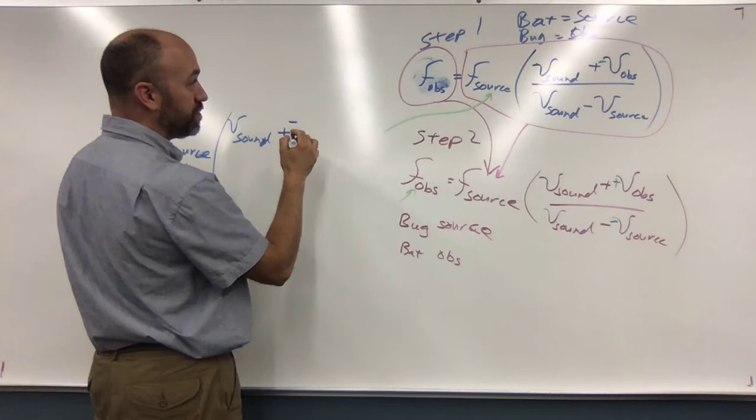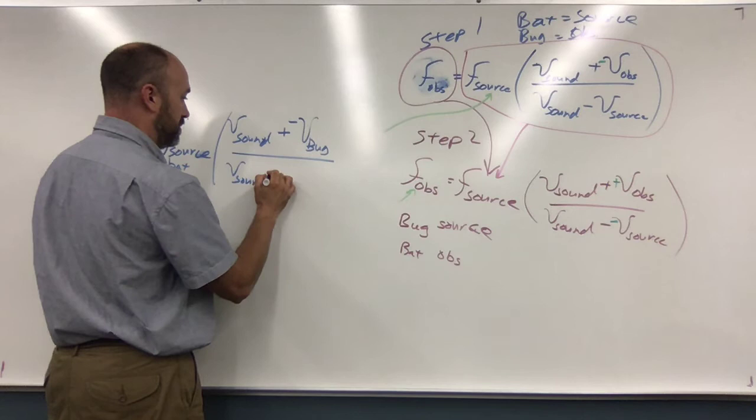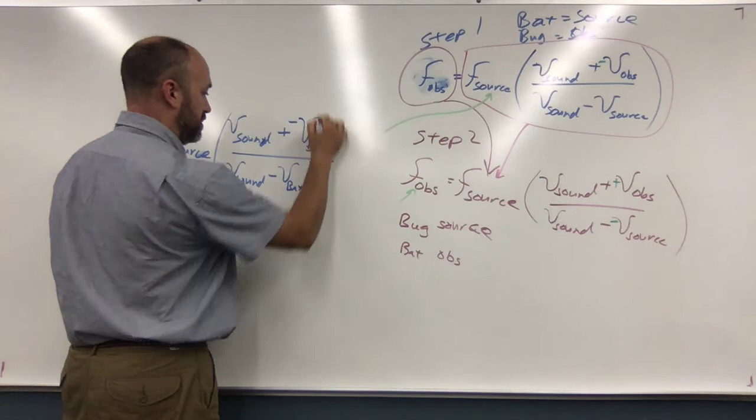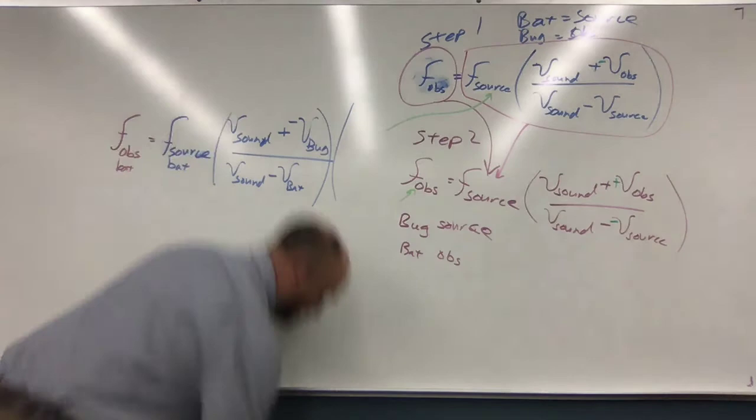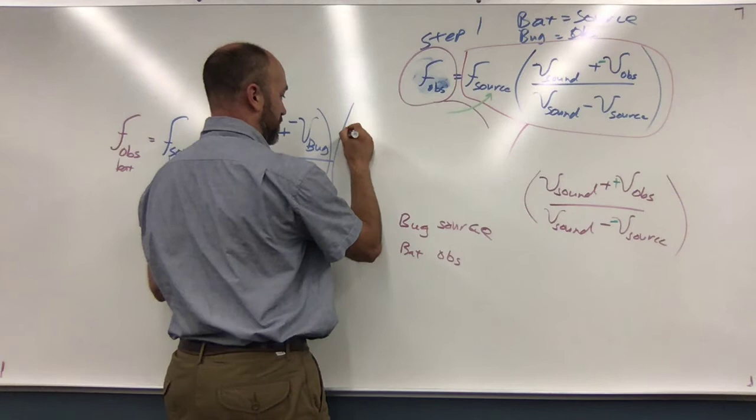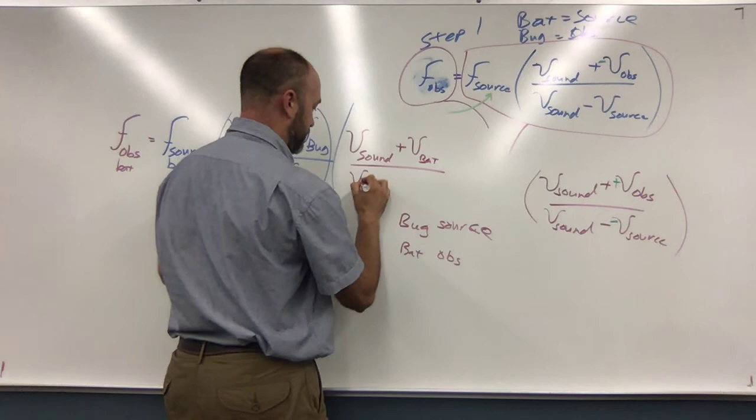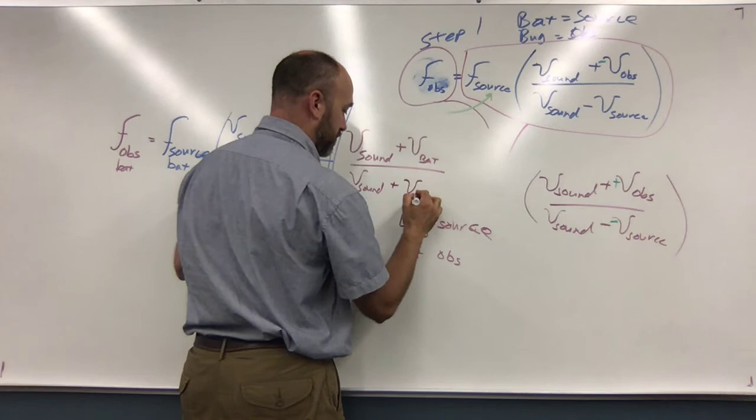Divided by V sound minus V bat. And now I'm gonna write this purple part here. V sound plus a negative V bug divided by V sound minus a negative V bat.